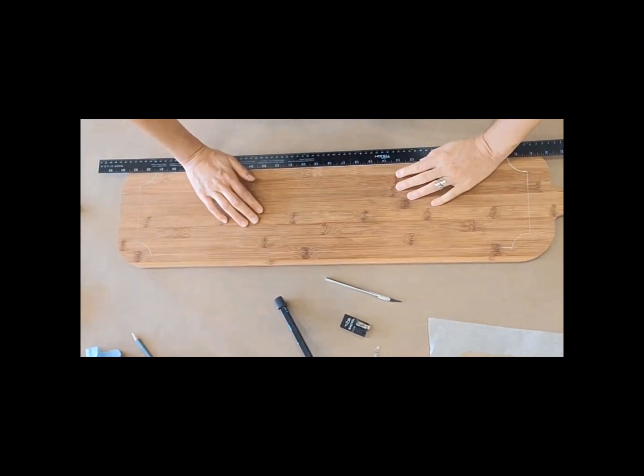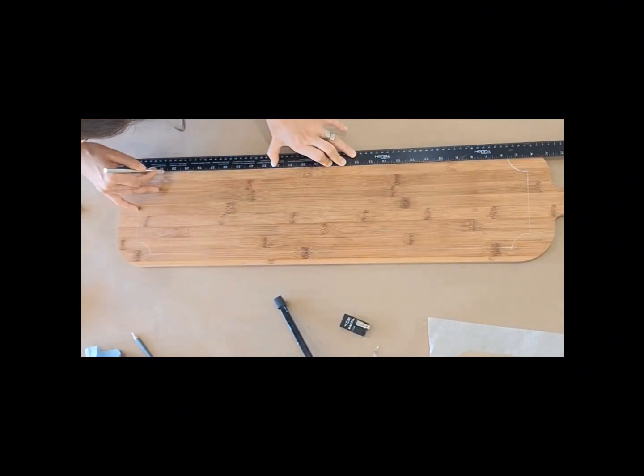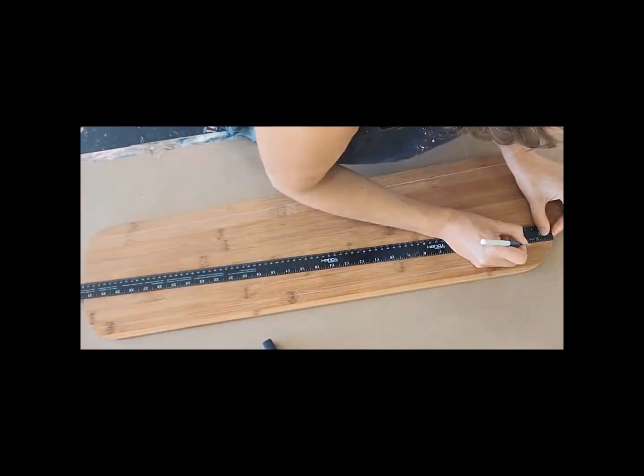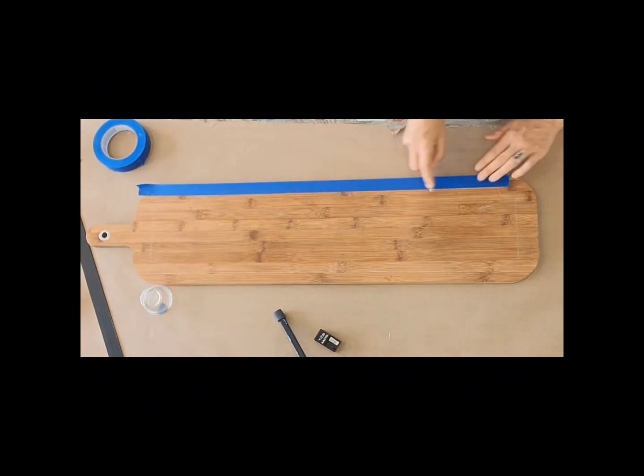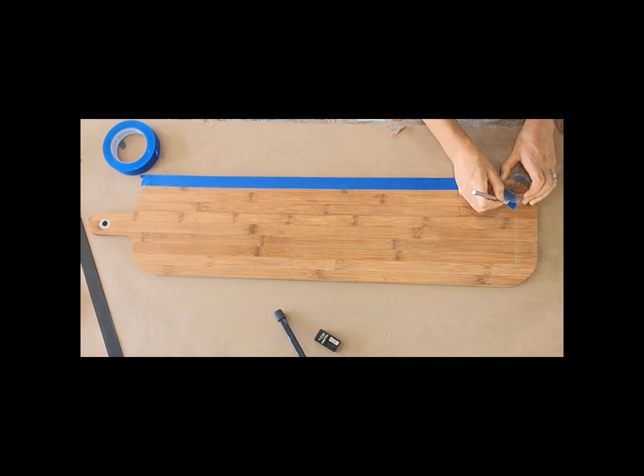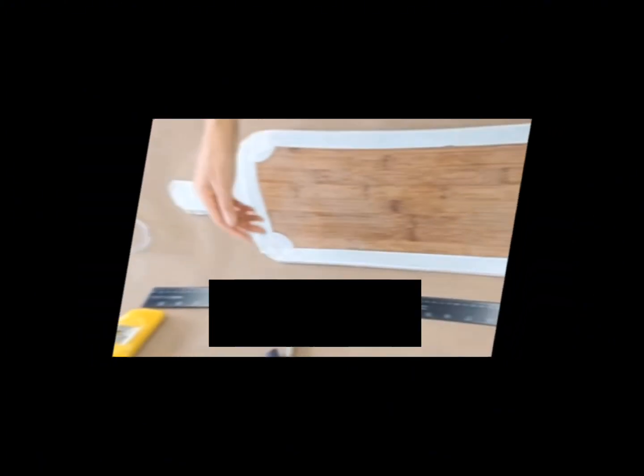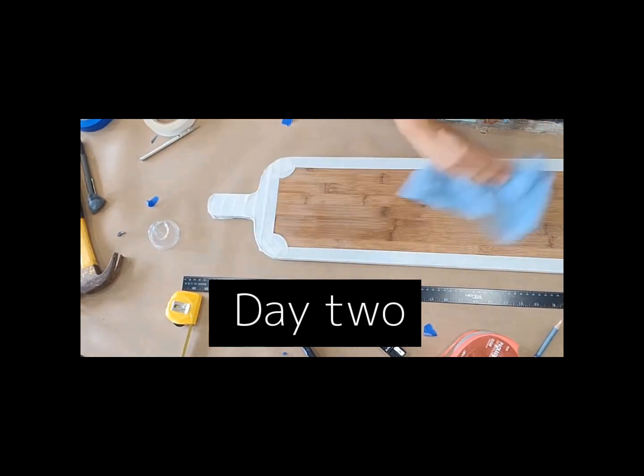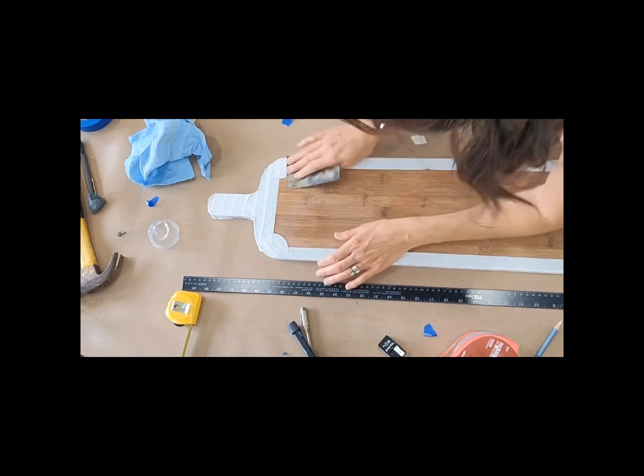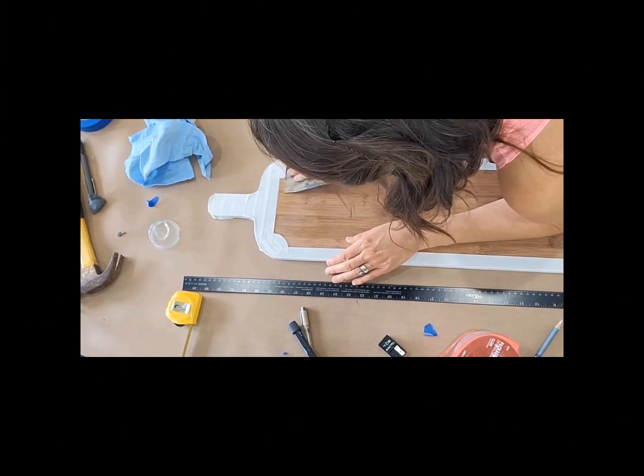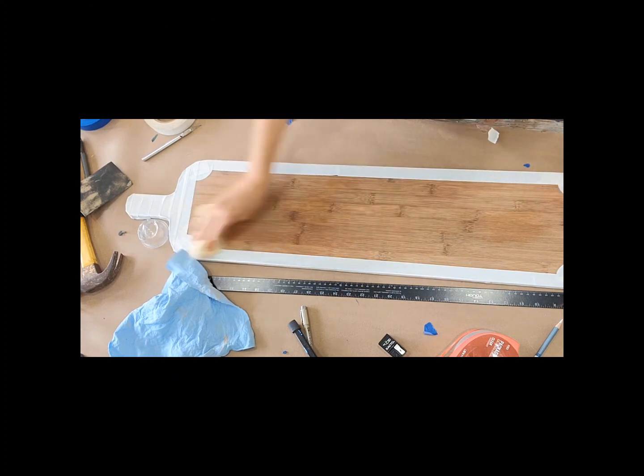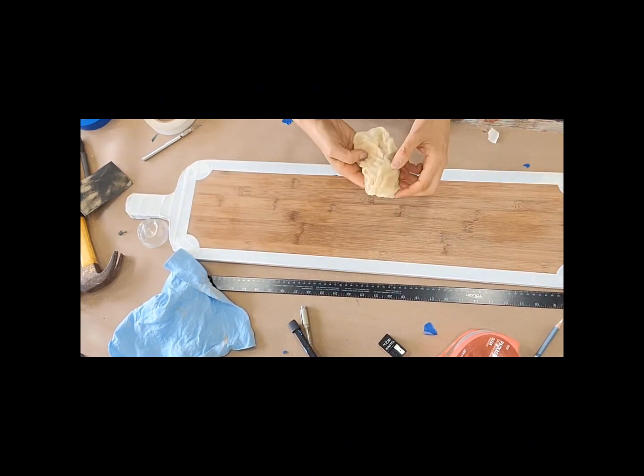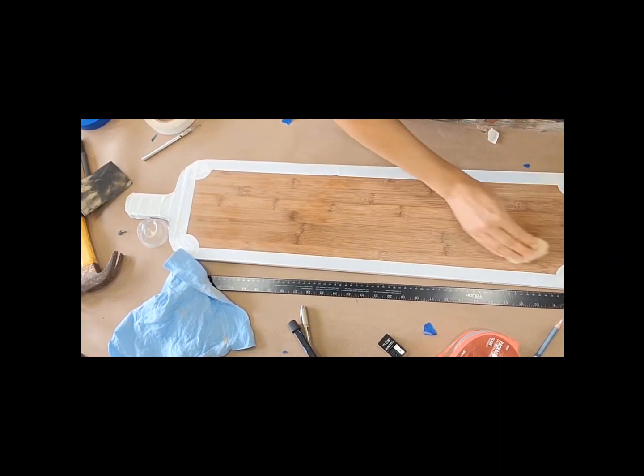You want to sand it down, take any sheen off of here so that your first coat sticks to it. For my tack cloth, I want to get off any excess dust before I put my base down.